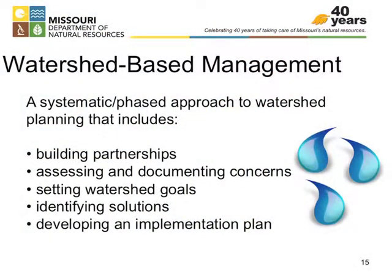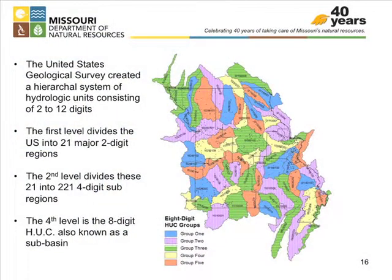So, watershed-based management is a systematic or phased approach to watershed planning, including building partnerships, assessing and documenting concerns, setting goals, finding solutions, and developing a plan to make those solutions happen. The watersheds, as I was starting to say, are divided in a hierarchical system that the USGS created, and they consist in hydrologic unit codes, or HUC, from 2 to 12 digits, and the smaller the digits, the larger the area. So, that first map that I showed was all the two-digit watersheds, and they go down to 12-digit watersheds. There's 21 of the two digits. Those 21 are divided into 221 four-digit subregions.